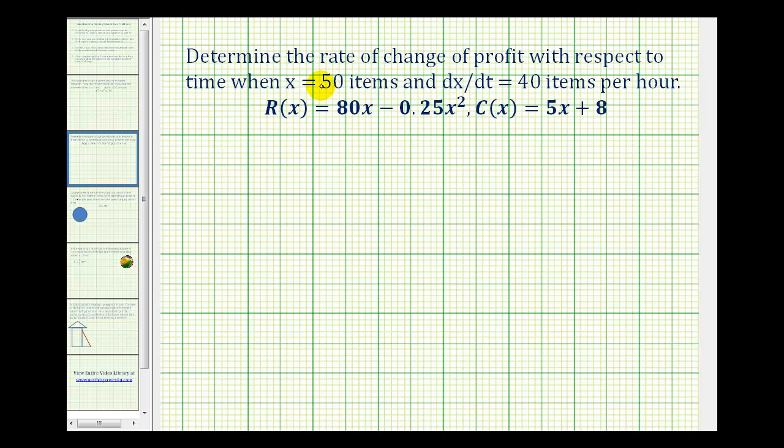Here's an example of a related rates problem. We want to determine the rate of change of profit with respect to time when x equals 50 items and dx/dt equals 40 items per hour.